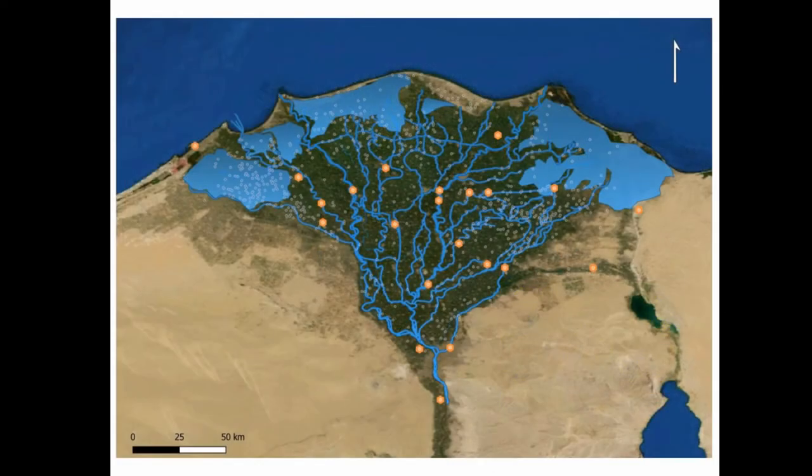Because of the accumulation of sediments in the coast, the gradient of the river was reduced and a system of main distributaries evolved in the Delta.